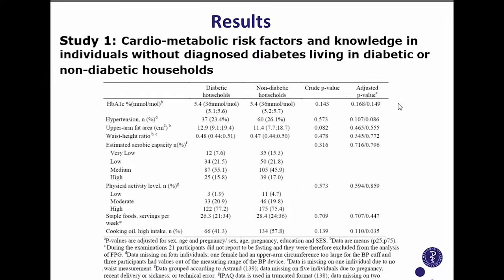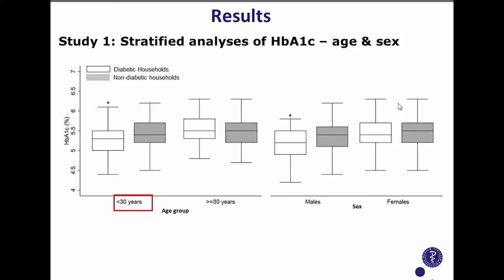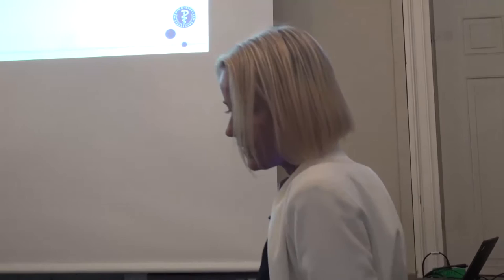For other variables — HbA1c, hypertension, anthropometry, physical activity, and nutrition — we didn't see any difference. When we stratified the data by age group, younger individuals below 30 had lower HbA1c if they came from a diabetic household compared to a non-diabetic household. Stratifying by sex, males had lower HbA1c if living in a diabetic household, but we saw no difference among females or older individuals.